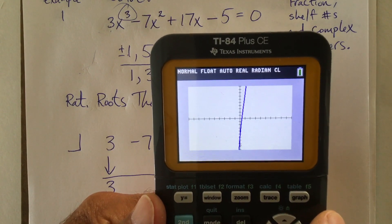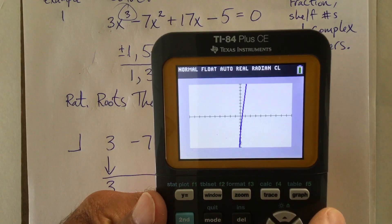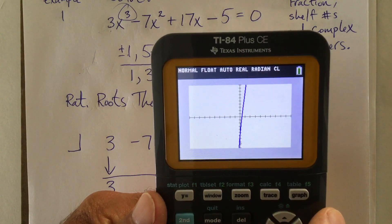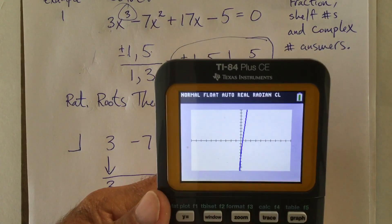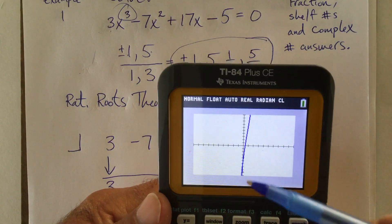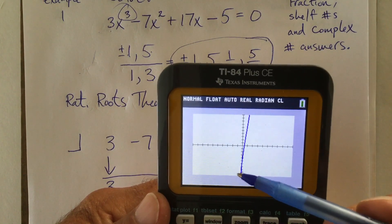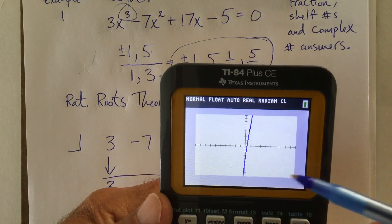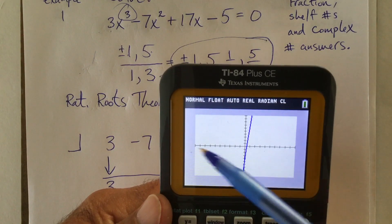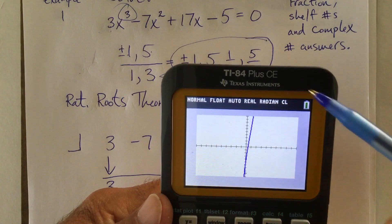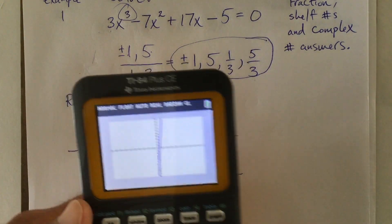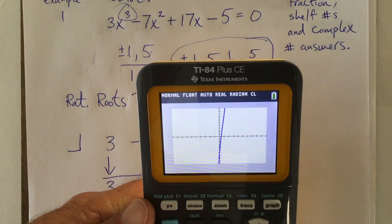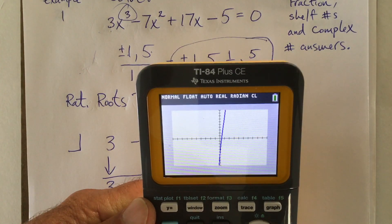Now, wait a minute. I'm supposed to have three answers. I only see one thing. Well, here's the deal with this. This graph is a third power polynomial. So it's supposed to go up on the right side and down on the left. Maybe this thing goes over here somewhere. Maybe it goes off the screen somewhere. Or maybe we have i numbers or complex number answers.